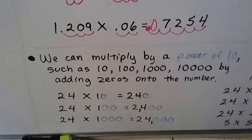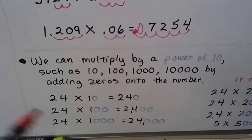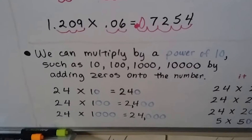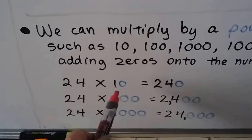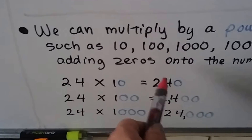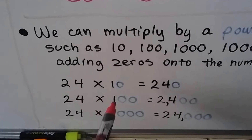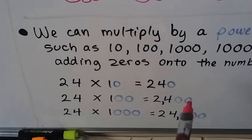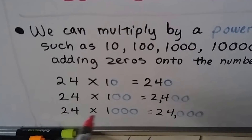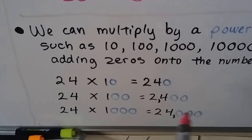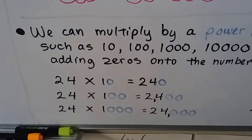We can multiply by a power of 10 — like 10, 100, 1,000, 10,000, 100,000, a million — by adding zeros onto the answer. So if you have 24 times 10, there's one zero, so we do 24 times 1 and add a zero to get 240. 24 times 100, there are two zeros, so we add two zeros to get 2,400. 24 times 1,000, there are three zeros, so we add three zeros to get 24,000. Basically you're doing 24 times 1 and then adding that number of zeros.